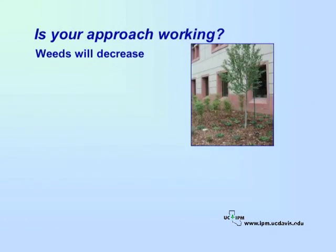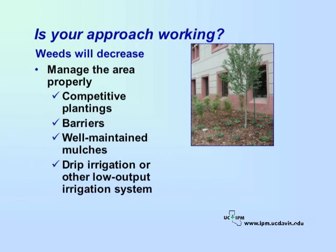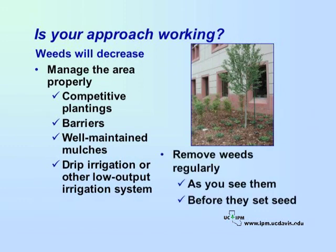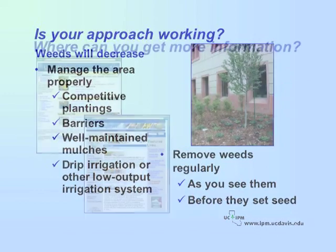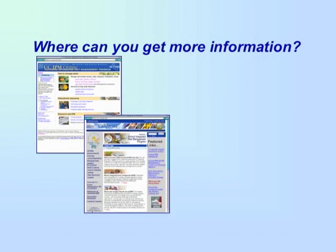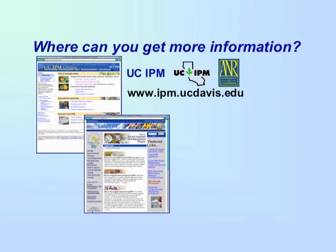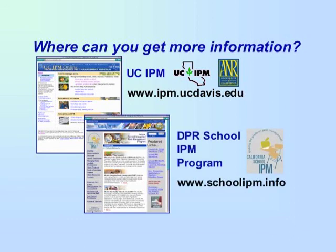Weeds will decrease in your landscape if you have managed the area properly using competitive plantings, barriers such as mowing strips, well-maintained mulches, and drip irrigation or other low-output irrigation systems. Remove weeds regularly as you see them and before they set seed. For more information about Integrated Pest Management for Weeds, visit the UC IPM website or contact the UC Cooperative Extension Office in your county. For more information on School IPM, see the School IPM Program website of the California Department of Pesticide Regulation.